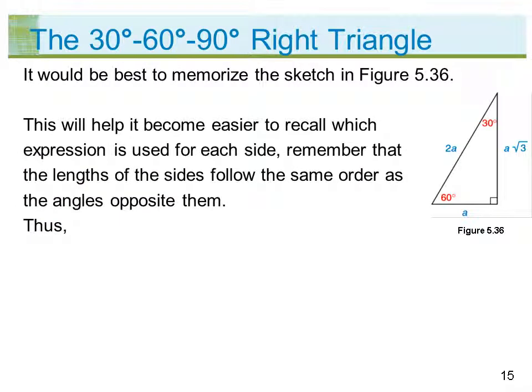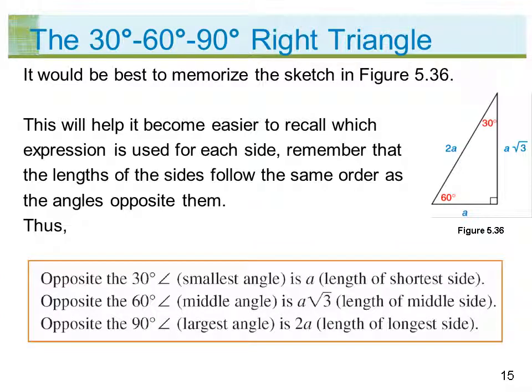It would be best to memorize the sketch in figure 5.36. This will help recall which expression is used for each side. Remember that the lengths of the sides follow the same order as the angles opposite them. Opposite the 30-degree angle, the smallest angle, is a, the length of the shortest side. Opposite the 60-degree angle, the middle angle, is a square root of 3, the length of the middle side. Opposite the 90-degree angle, the largest angle, is 2a, the length of the longest side.